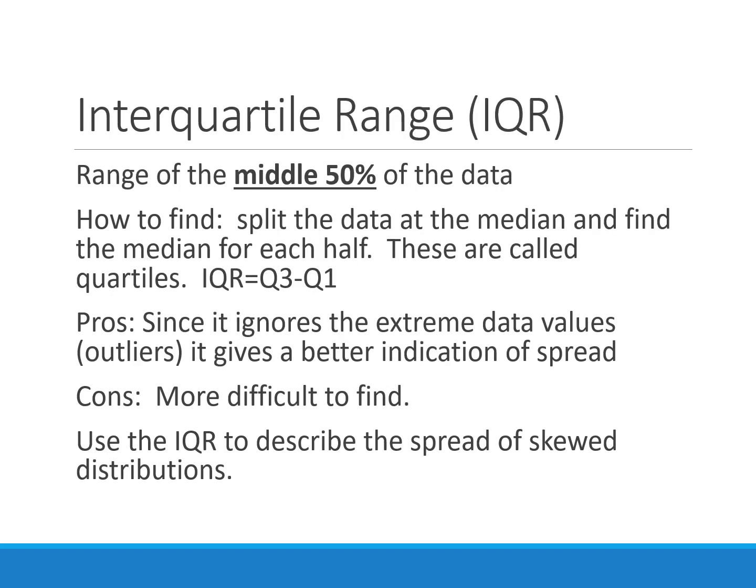The interquartile range, or IQR, describes the middle 50% of the data. We cut off the top 25% and the bottom 25% — where the outliers would be — and look just at the middle half. It's a little more difficult to find, but since we're ignoring extreme values at either end, it gives a better indication of spread. We find it by taking the third quartile (75th percentile) minus the first quartile (25th percentile). We'll use our calculator for this, which will give us a graphical display.